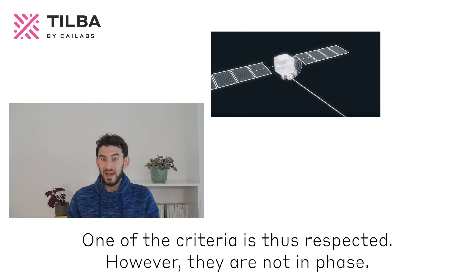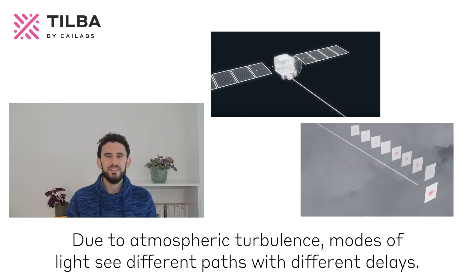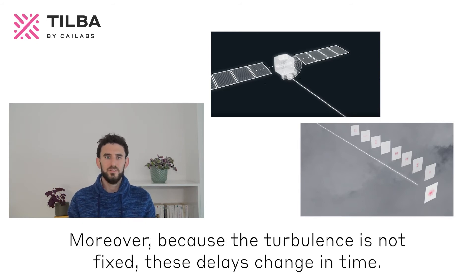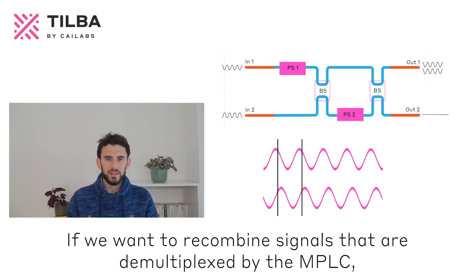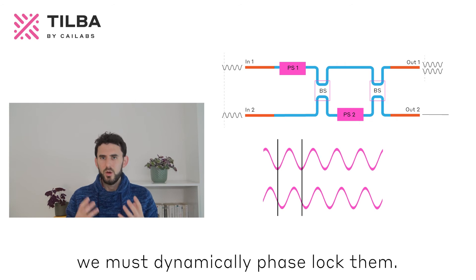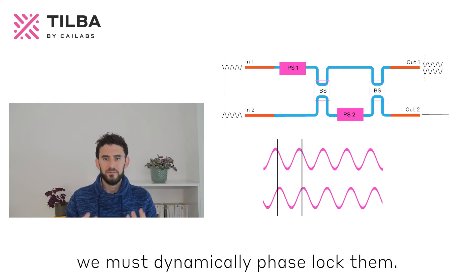However, they are not in phase. Due to atmospheric turbulence, modes of light see different paths with different delays. Moreover, because the turbulence is not fixed, these delays change in time. If we want to recombine signals that are demultiplexed by the MPLC, we must dynamically phase-lock them.